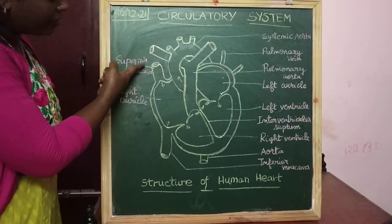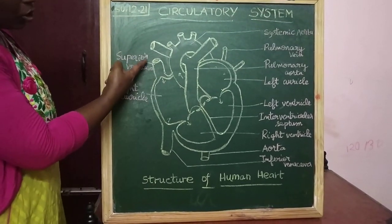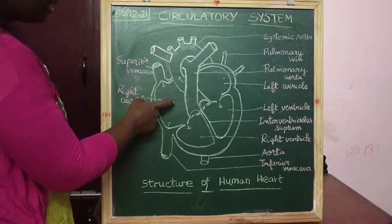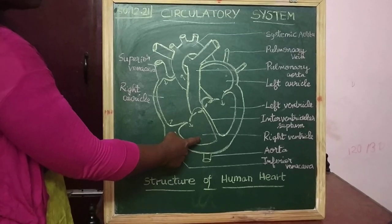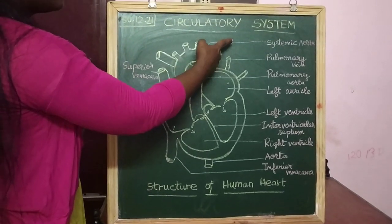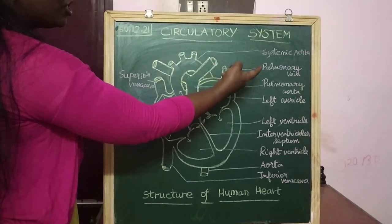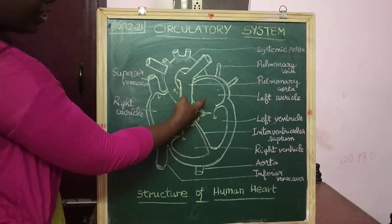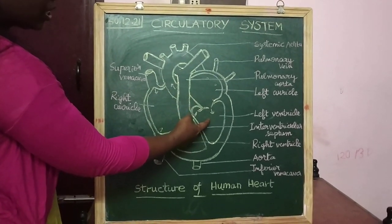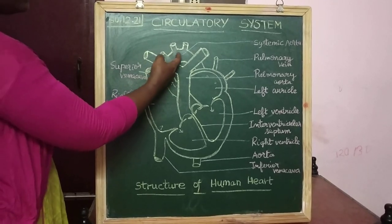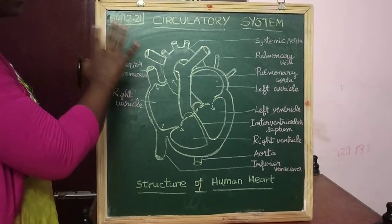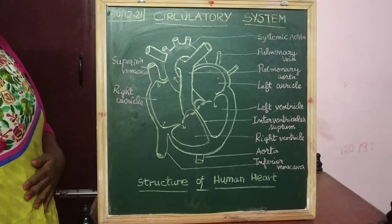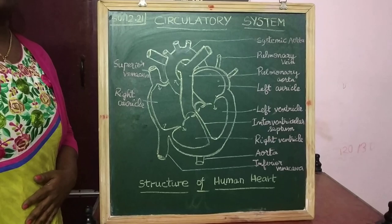To summarize: deoxygenated blood from the superior vena cava, inferior vena cava, and coronary sinus all comes to the right auricle, passes to the right ventricle, and goes to the lungs through the pulmonary artery. Oxygenated blood from the lungs comes back to the heart through the pulmonary vein, reaches the left auricle, then the left ventricle, and again to the aorta — the systemic aorta — to the different systems of the body. That is the working process of the heart. In the next session we will learn about the blood vessels. Thank you.